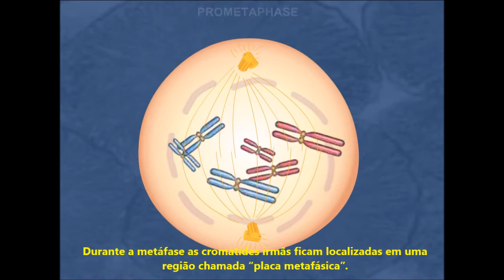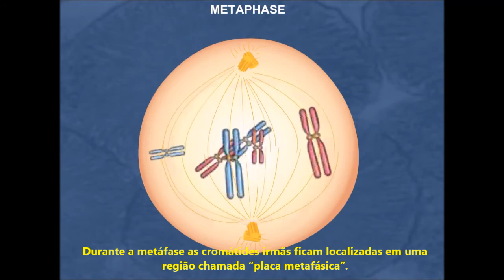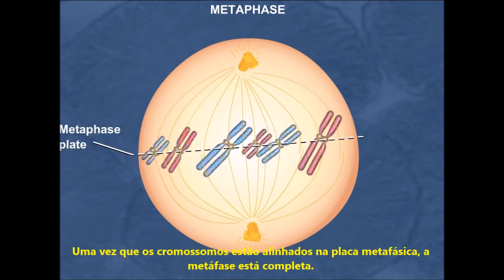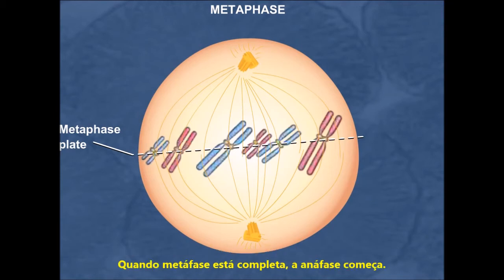During metaphase, the sister chromatids become localized in a region called the metaphase plate. Once the chromosomes have aligned at the metaphase plate, metaphase is complete.